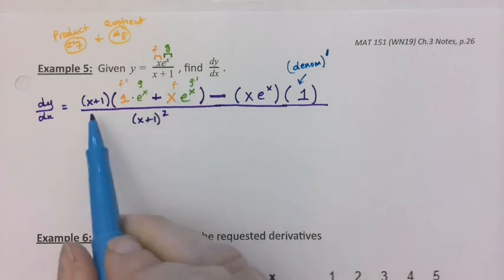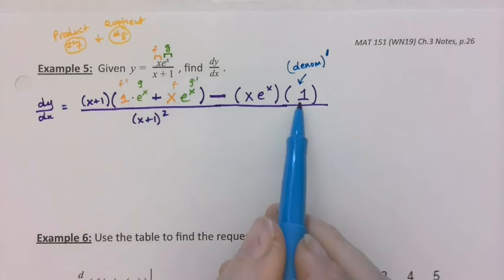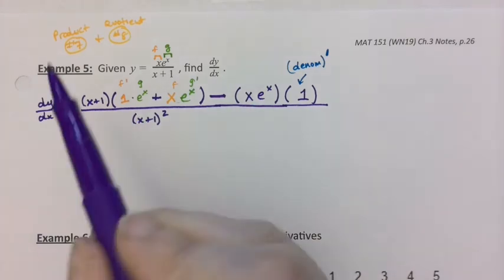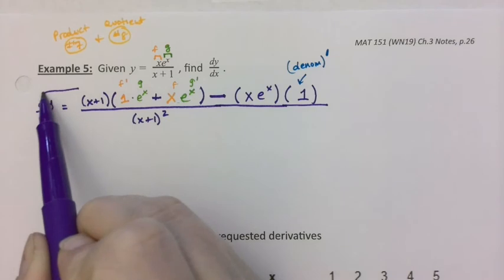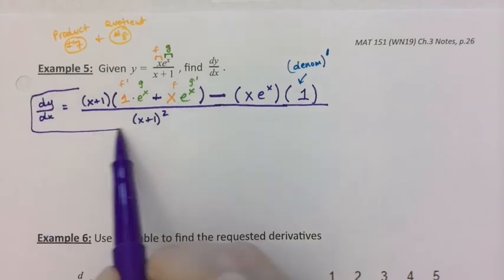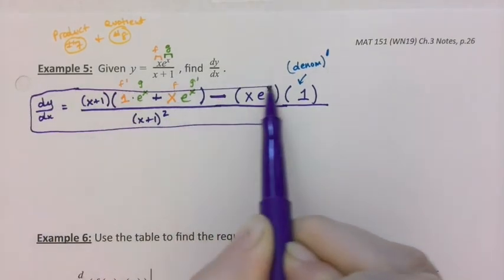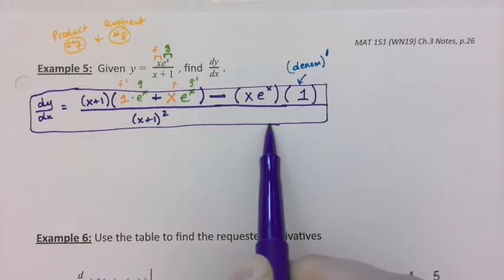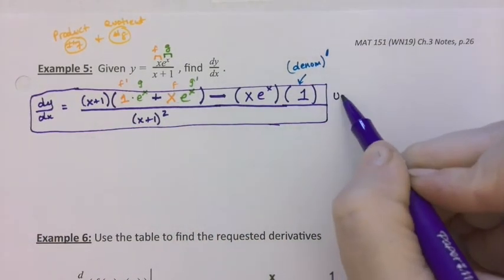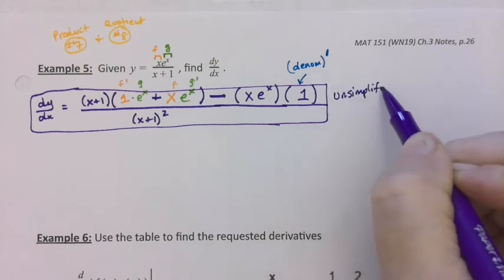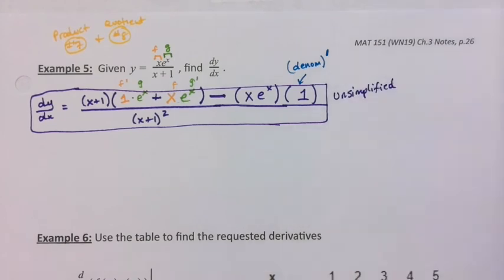All I have to do now is just combine, and if they want it unsimplified, you're actually done. So if you want it unsimplified, we're finished right here. That's the unsimplified answer, which again will be asked for regularly.